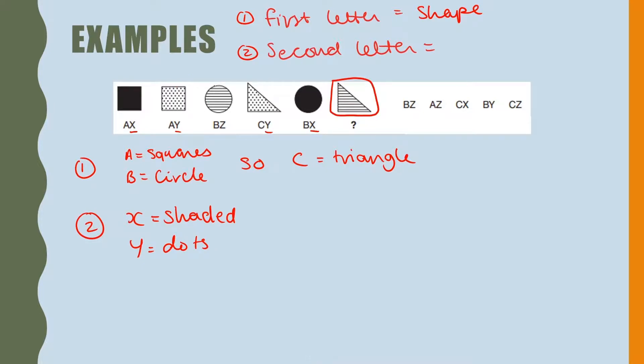The question is asking us for stripes. This shape is the only one that has stripes. Therefore, letter Z equals stripes. We know that the second letter represents what's inside.